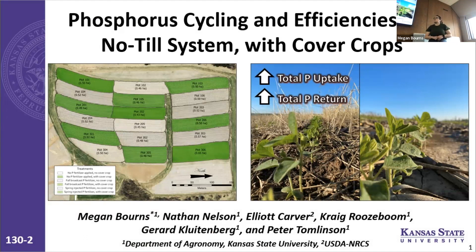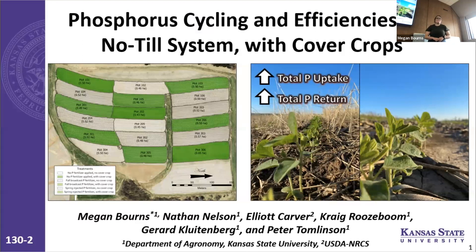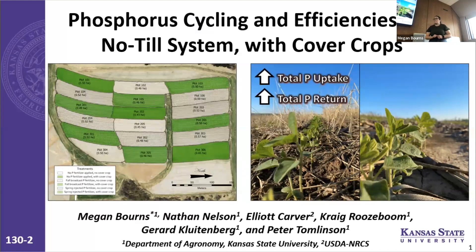For results from the seed fertilizer management portion, we'll talk about that at my poster later. For now, looking at agronomic phosphorus cycling in the system: where we had cover crops, we saw an increase in total phosphorus uptake and return in the system as a whole — which is expected where more biomass is accumulating nutrients. However, we didn't see an effect of cover crop on main crop phosphorus cycling, uptake, removal, or return, nor on agronomic phosphorus use efficiency.